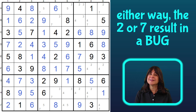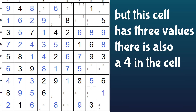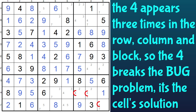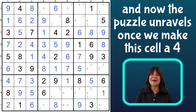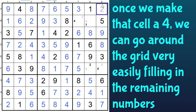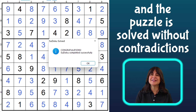Whether this cell is a two or a seven, we can follow through and find the puzzle doesn't have a valid solution — and that is a bug in the puzzle, literally. In computer code, a bug is not good, and neither is a grave. But this cell did have three values: a two, seven, and a four. And the four appears three times in the row, and also the column, and also three times in the block, so the four breaks the bug problem. Now the puzzle unravels: four, seven, two, three, seven, five, four, three, seven, five, three, two, seven, four, two, four, and the puzzle is solved.